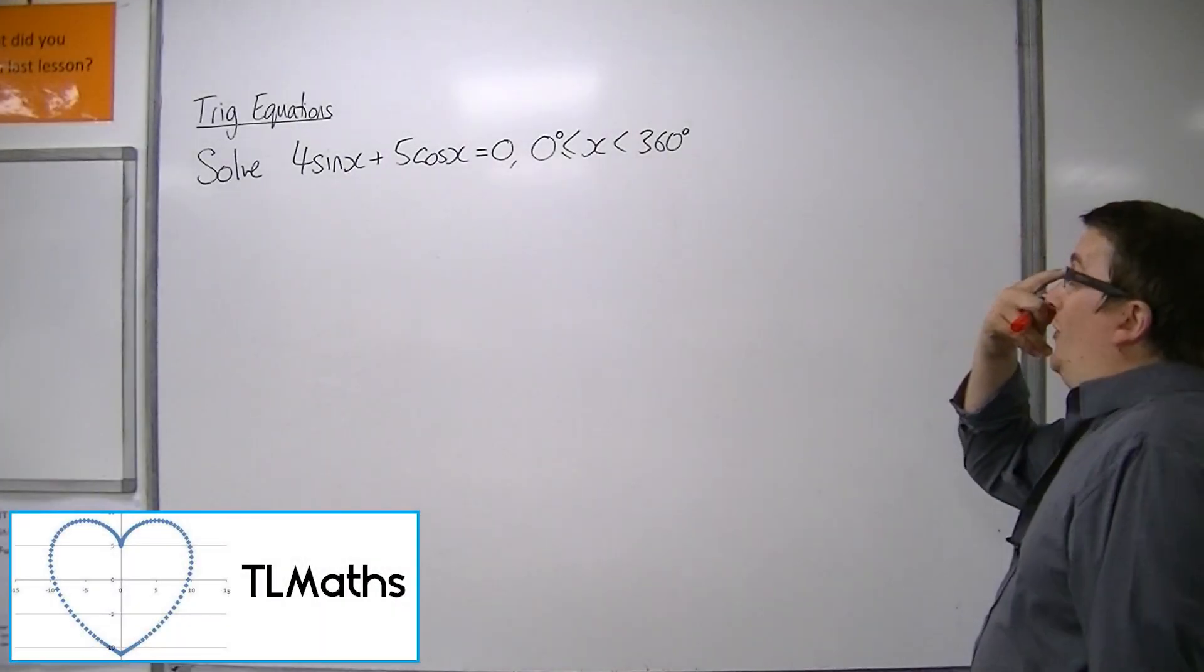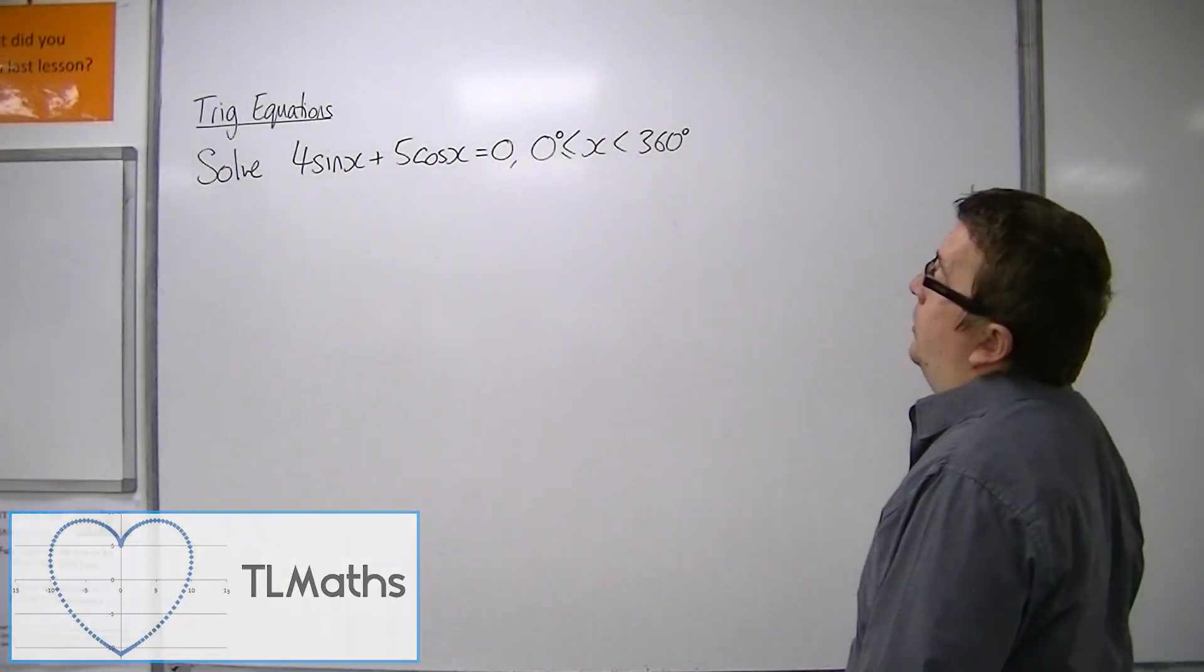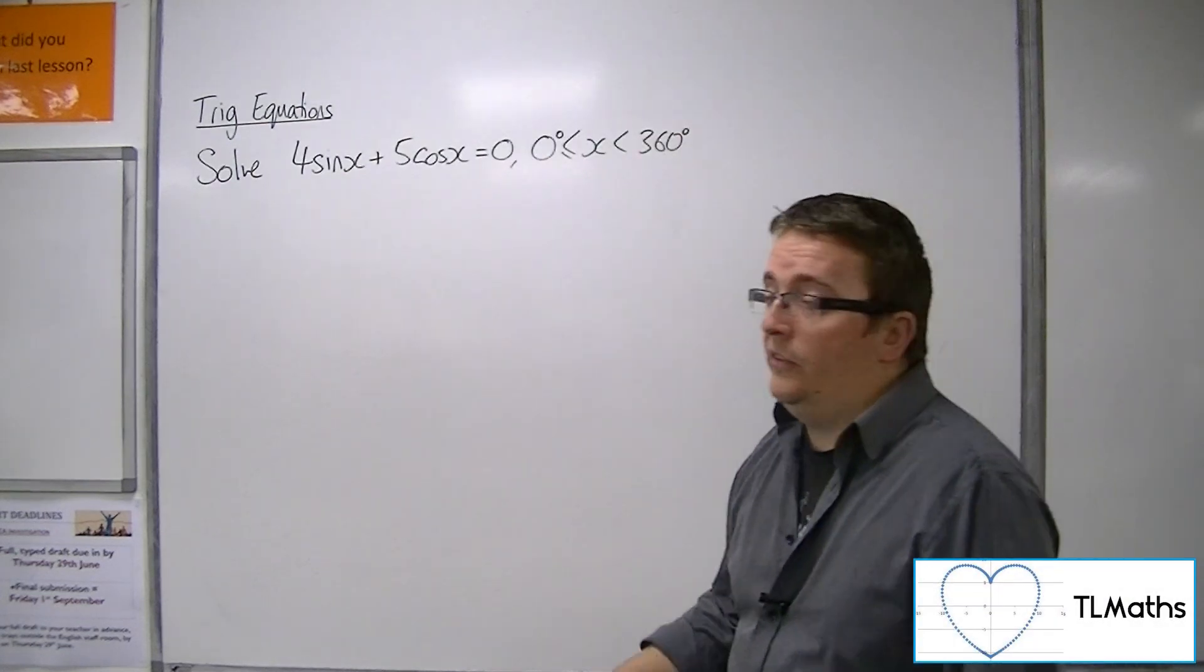OK, so let's say we want to solve 4 sine x plus 5 cos x equals 0 between 0 and 360 degrees.